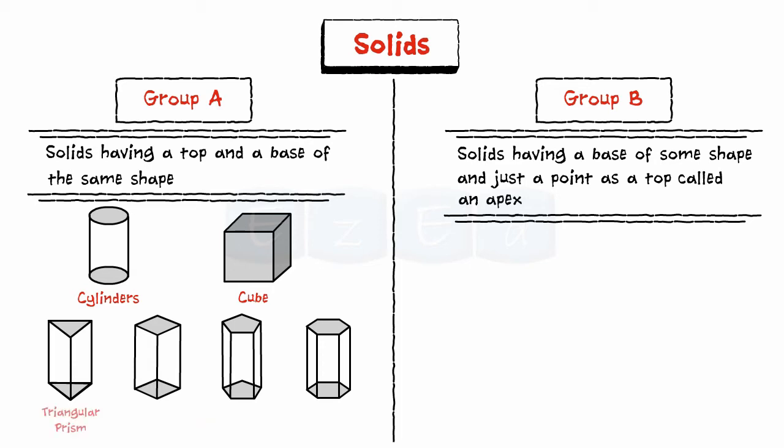Prisms include triangular prism, square prism, pentagonal prism, and hexagonal prism. Solids having a base of the same shape and just a point as a top called an apex are cones.